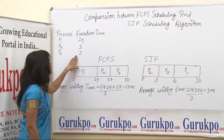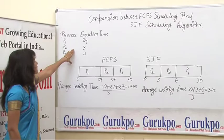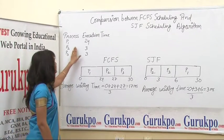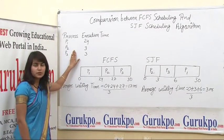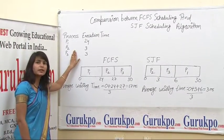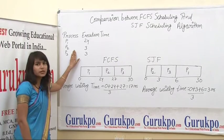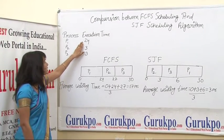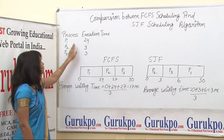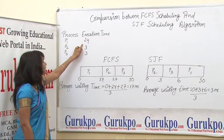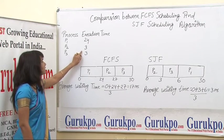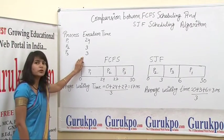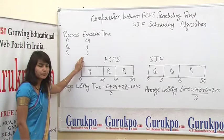Here we can consider the following set of processes: P1, P2, and P3. These processes arrive at time 0 in the ready queue, and the execution time required for these processes is 24 milliseconds for P1, 3 milliseconds for P2, and 3 milliseconds for P3.